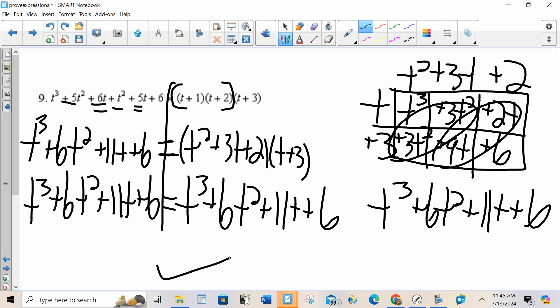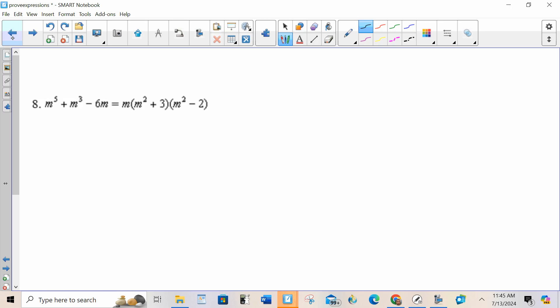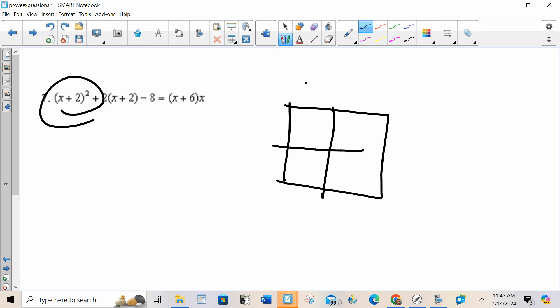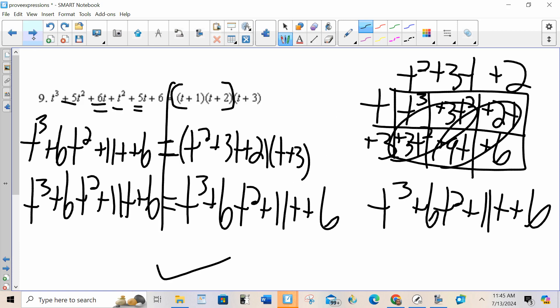One other thing I want to mention, just common mistakes, but we talked about it in the last one. Whenever you have a binomial squared, make sure you do x plus 2 times x plus 2. That's it. Perform operations with polynomials on the left-hand side and on the right-hand side and then show that they're the same.